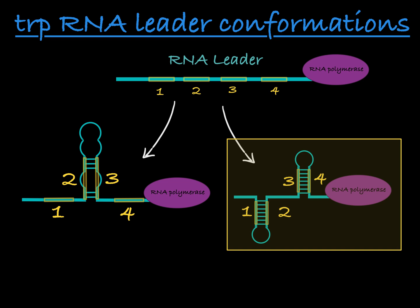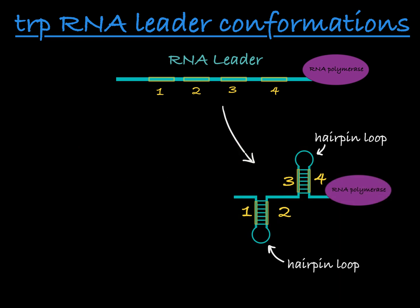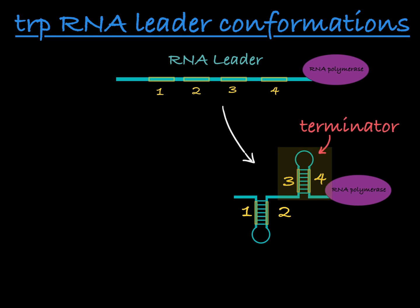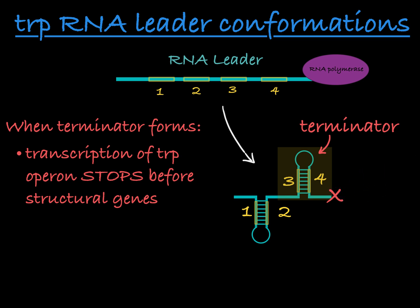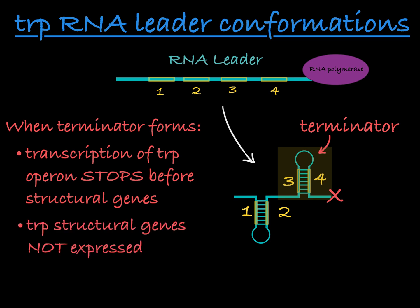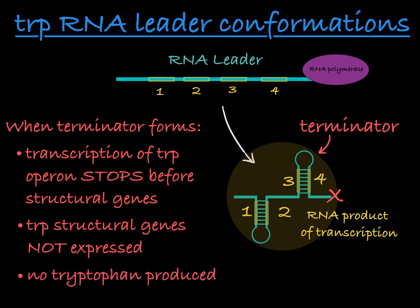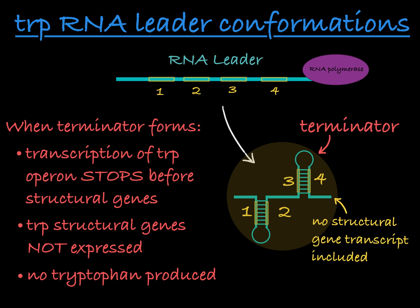Let's focus over here. This formation contains two hairpin loops, and this one is called a terminator. When this hairpin loop forms between regions 3 and 4 of the RNA leader, it causes transcription to stop before the polymerase can reach the structural genes. If the RNA leader forms this structure, the structural genes are not expressed, meaning the cell will not be able to make tryptophan. The RNA product of transcription in this case is shortened, attenuated RNA, with no structural gene sequence.